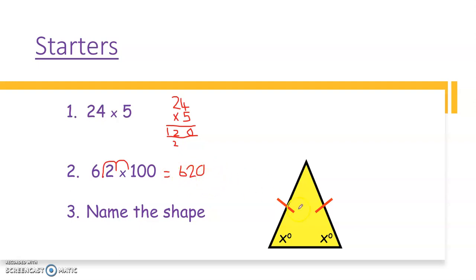Question number three, name this shape. You can see initially it's a triangle, but I want to know a bit more about it than that. What type of triangle is it? It's an isosceles triangle, called that because these two red lines tell me that these two sides of the triangle are the exact same length. Therefore these two angles marked X are also the same size.